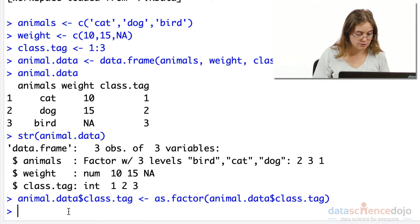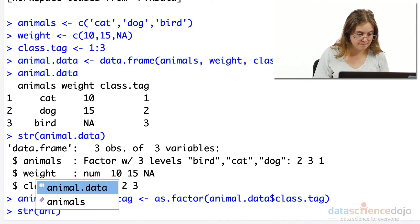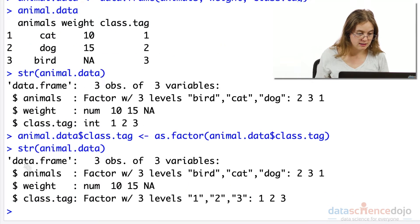Now if we look at the structure of animal data, we can see that it is treated accordingly. It is now factors. We have three distinct factor levels: factor level one, two, and three as our class labels.